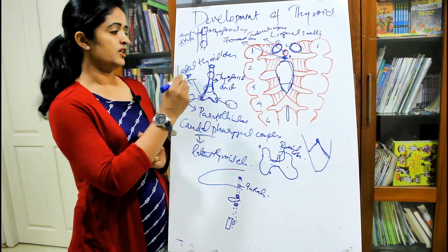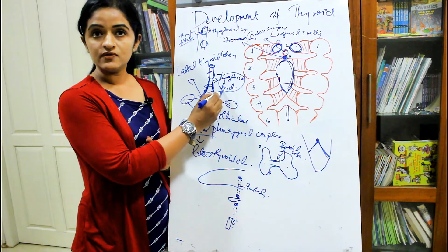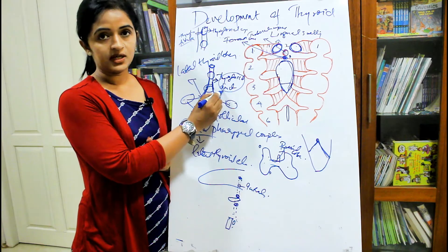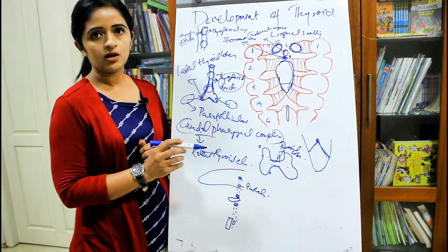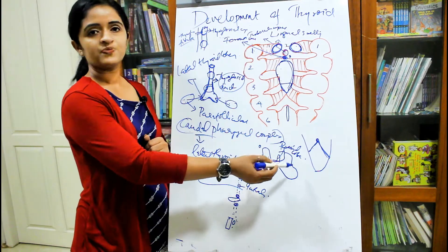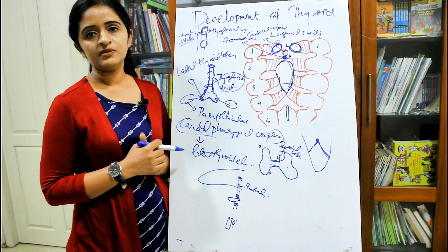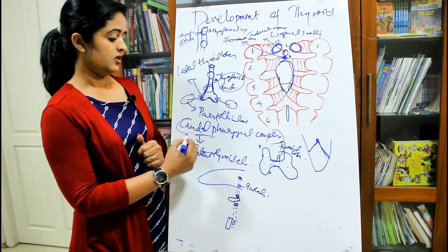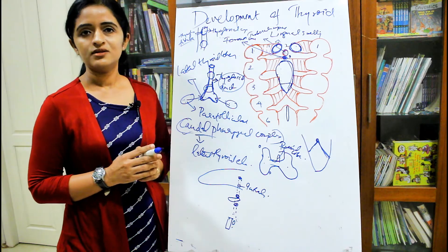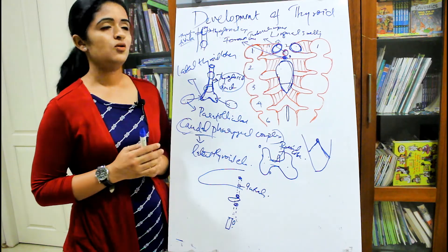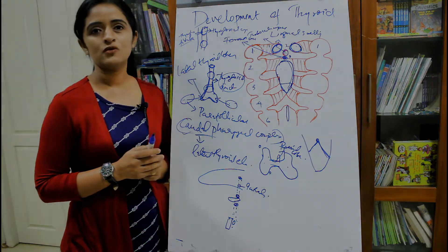In summary, the thyroid gland develops from two components: the thyroglossal duct and the caudal pharyngeal complex. The main gland — the lateral lobes — is formed from the thyroglossal duct, while the caudal pharyngeal complex gives rise to the parafollicular C cells. That's all about the development of thyroid in a nutshell. Thanks for watching.